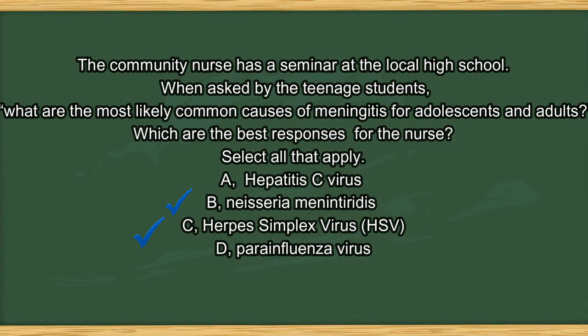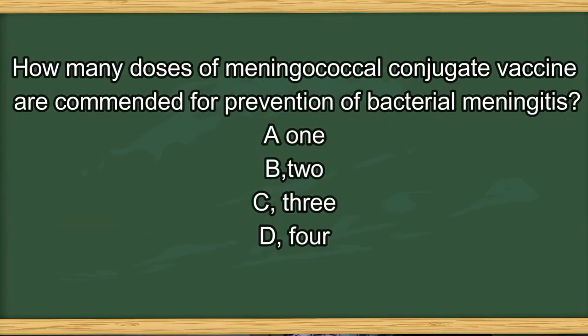The answers are option B and option C. Option B, Neisseria meningitidis, is the number one cause among teenagers and is seen more often in less well-developed countries. Option C, herpes simplex virus, is also a correct answer — primary herpes simplex virus has been increasingly recognized as a cause of viral meningitis in adults.